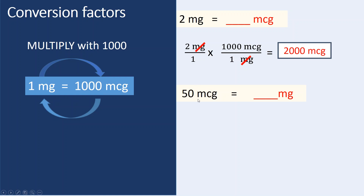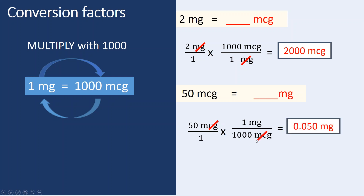Another example: 50 micrograms equals how many milligrams? Set up the dimensional analysis — 50 micrograms, with 1 milligram equal to 1000 micrograms. Micrograms cancel out. Then 50 over 1000 gives you 0.05 milligrams. You can also convert by dividing micrograms by 1000 to get milligrams.